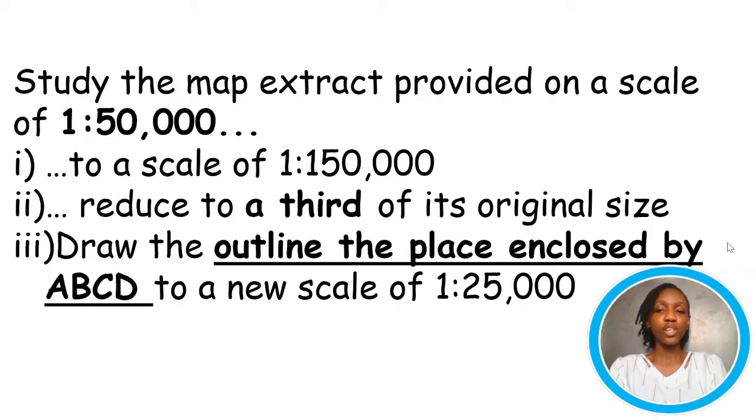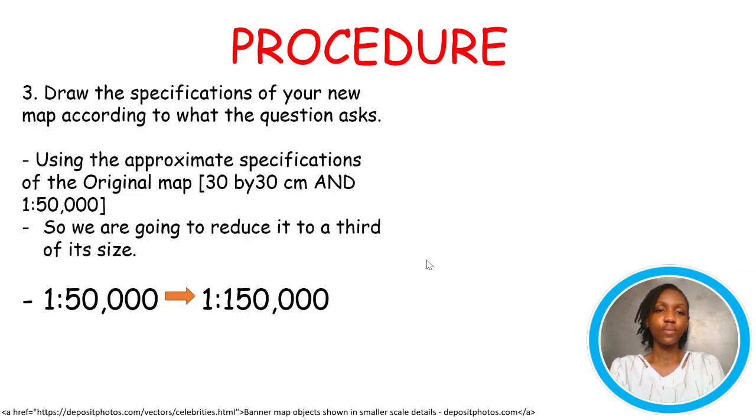The questions will almost always ask you to reduce your map because if you are given a map that's 30 by 30 and you're asked to increase it by a factor of 2, that means you're going to get 60 by 60 centimeters. They wouldn't want to stress you and themselves by providing you with such a huge paper. So, that's why you're never going to see a question like that. But notice that for question 3, even though the new scale is 1 ratio 25,000, that means that the map is supposed to be enlarged by a factor of 2. But take note that they didn't ask for the enlargement of the whole map. They only asked for the enlargement of a given section, A, B, C, D. So, this is the only case where you are going to see enlargements in your practical geography questions.